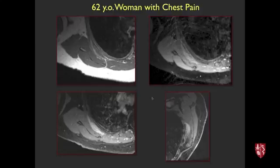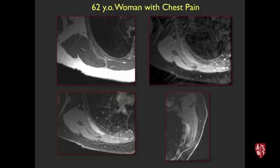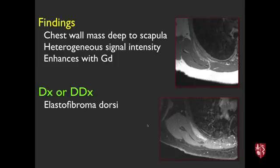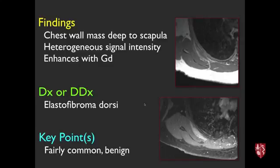Next case, 62-year-old woman with chest pain. There's a lesion deep to the scapula with contrast enhancement. This is an elastofibroma dorsi — a benign lesion, probably related to chronic friction, occurring in older female patients. It can have fatty streaks on cross-sectional imaging because of its elastin and fatty elements.